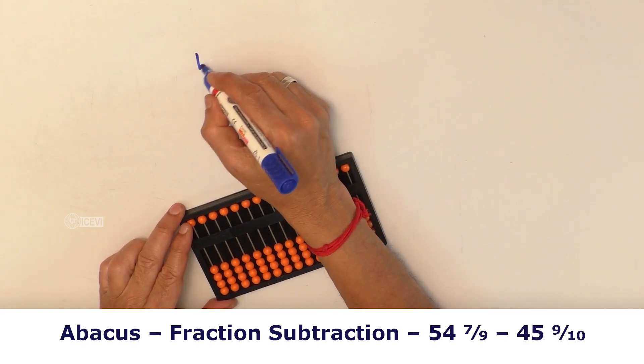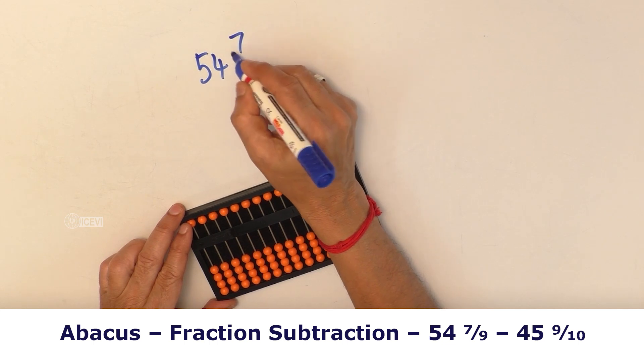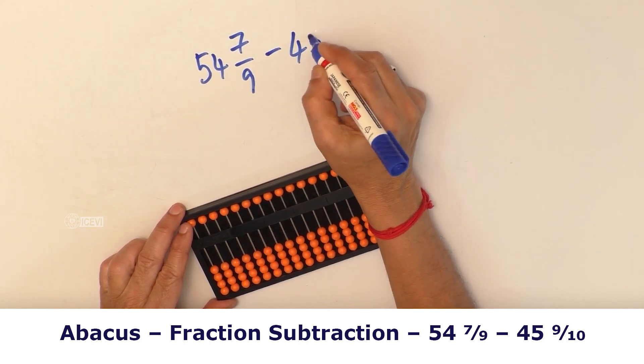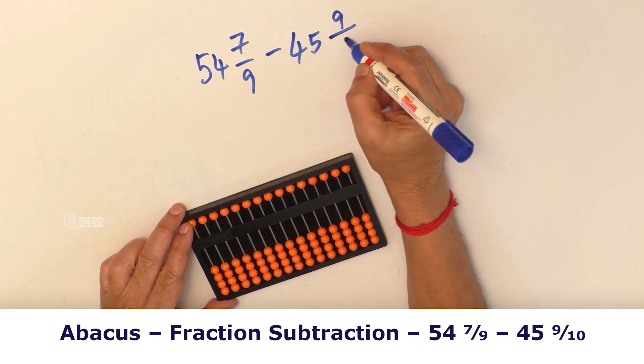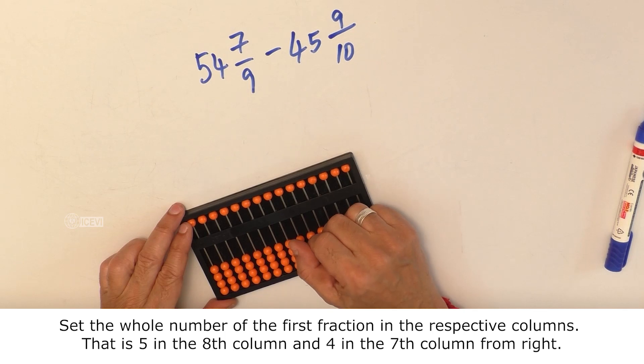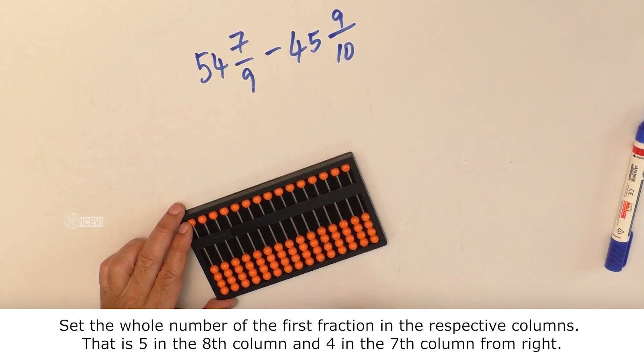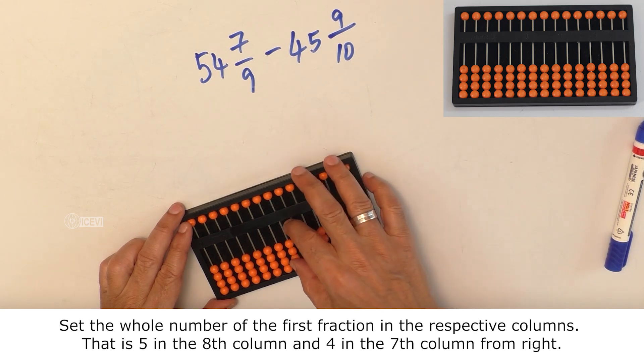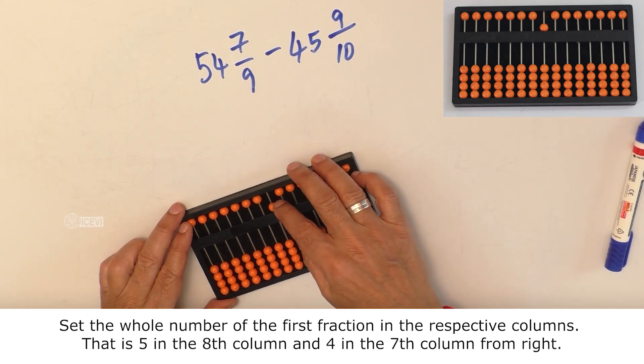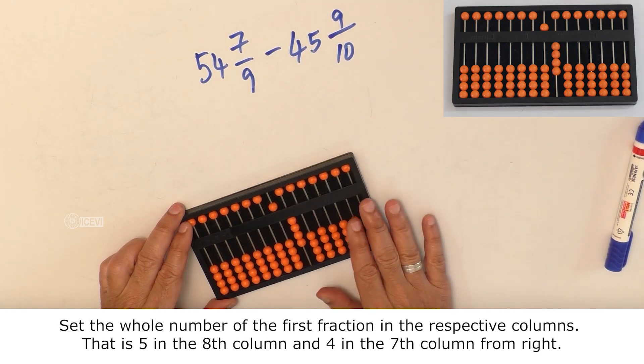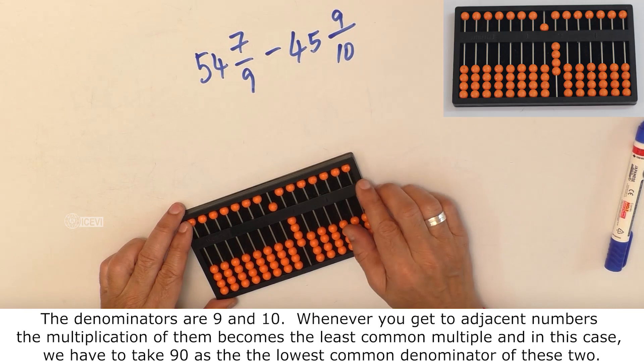Example: 54 7/9 minus 45 9/10. Set the whole number of the first fraction in the respective columns. That is 5 in the 8th column and 4 in the 7th column from the right.